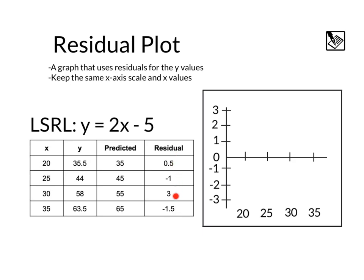On the y-axis, we're actually going to graph the residuals. Here we have residuals 0.5, negative 1, 3, and negative 1.5. So this scale will work for us. When we want to graph the residuals, we're going to take the x value and the residual as our y value. So we have a point at 20, 0.5. We have another point at 25, negative 1. Another point at 30, 3. And another point at 35, negative 1.5.